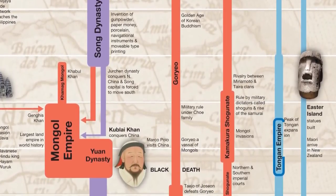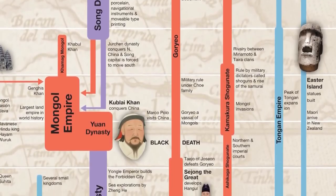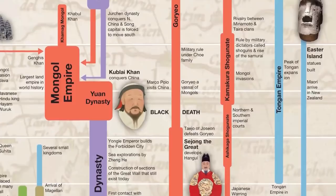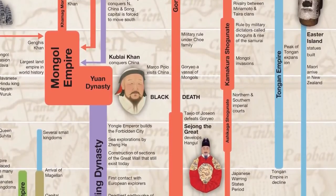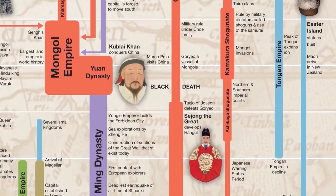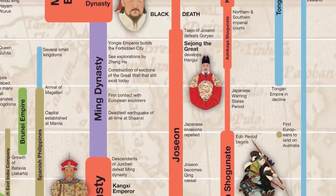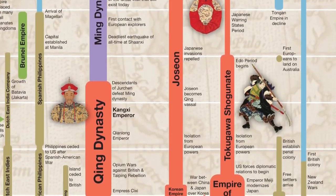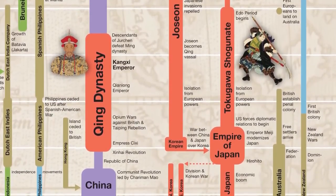Around the same time, the famous Easter Island statues were built, and for the first time ever, humans reached New Zealand. That's right — prior to the arrival of the Maori around the year 1300, New Zealand was uninhabited. Several hundred years later, Europeans started to arrive, and eventually two of the largest states in Oceania — Australia and New Zealand — were formed.